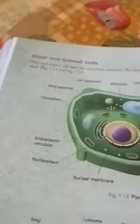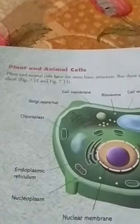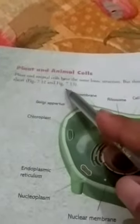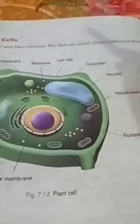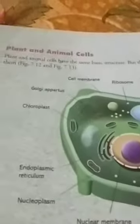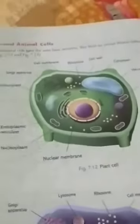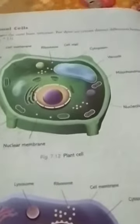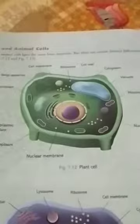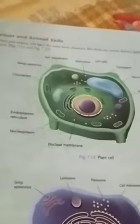Hello class 8th students. This is part 15, chapter 7 science. Here we read about the plant and animal cell. All cells have the same basic structure, so plant and animal cell have the same basic structure but there are certain distinct differences between them. We are here to discuss those differences — how you distinguish or differentiate the plant cell and animal cell.